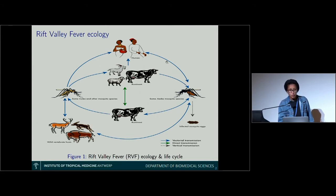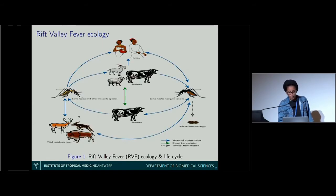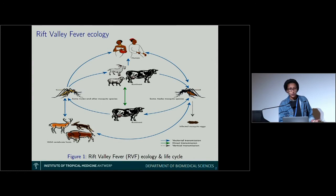The virus can affect both humans and animals. Domestic animals such as cattle, sheep, and goats can be affected, as well as wild animals like buffaloes and antelopes. Humans can be infected either by the bite of an infected mosquito, or by direct or indirect contact with domestic animals — any contact with blood, body fluids, raw milk, raw meat, or blood of infected animals.